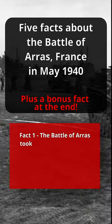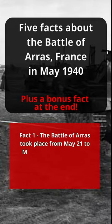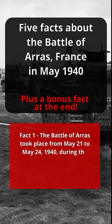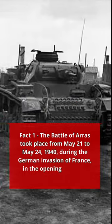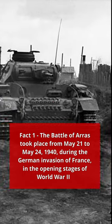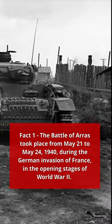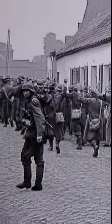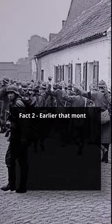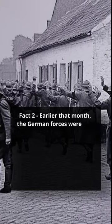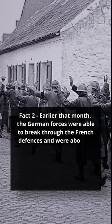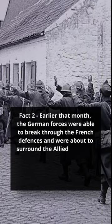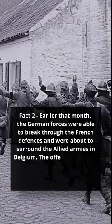The Battle of Eras took place from May 21 to May 24, 1940, during the German invasion of France in the opening stages of World War II. Earlier that month, the German forces were able to break through the French defenses and were about to surround the Allied armies in Belgium.